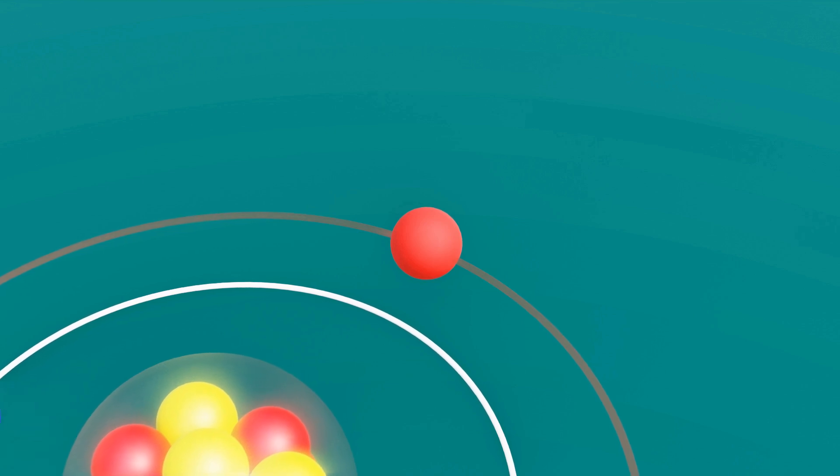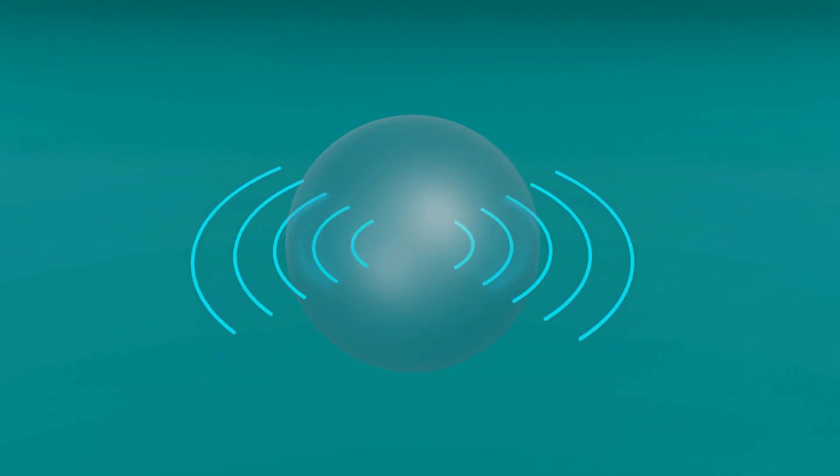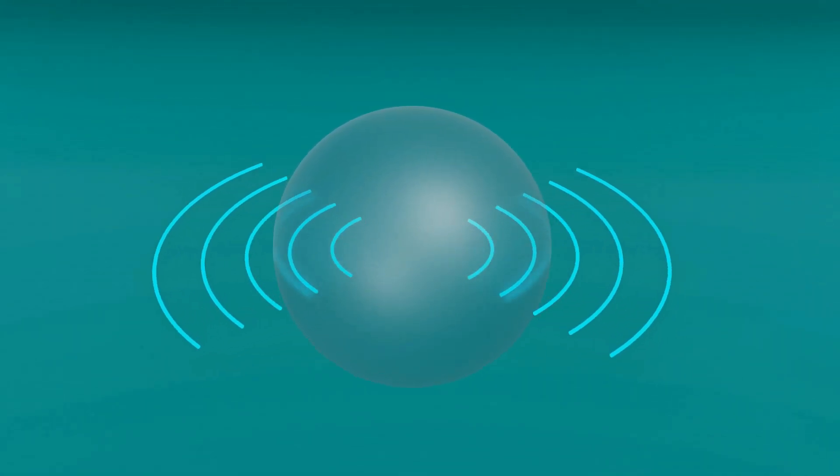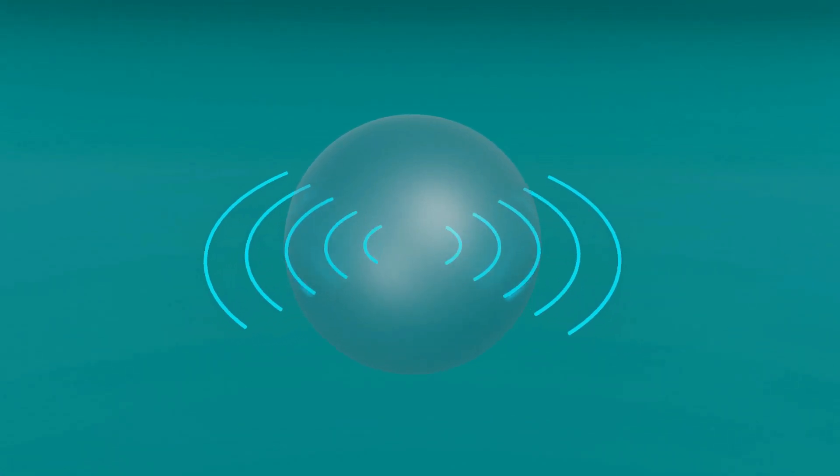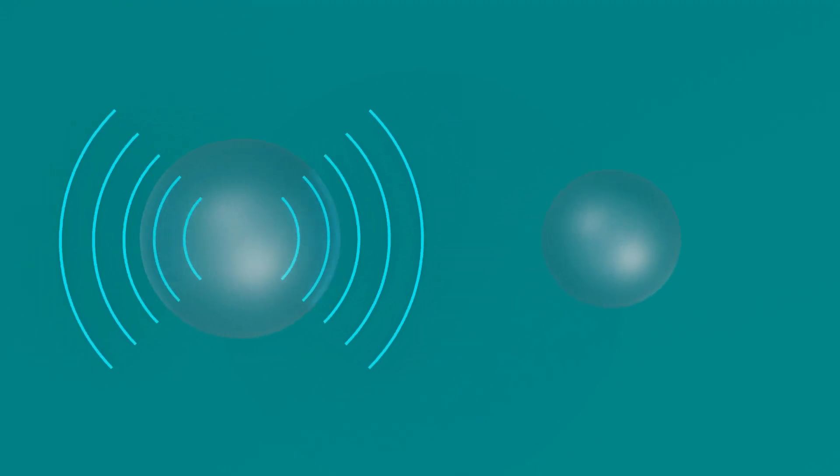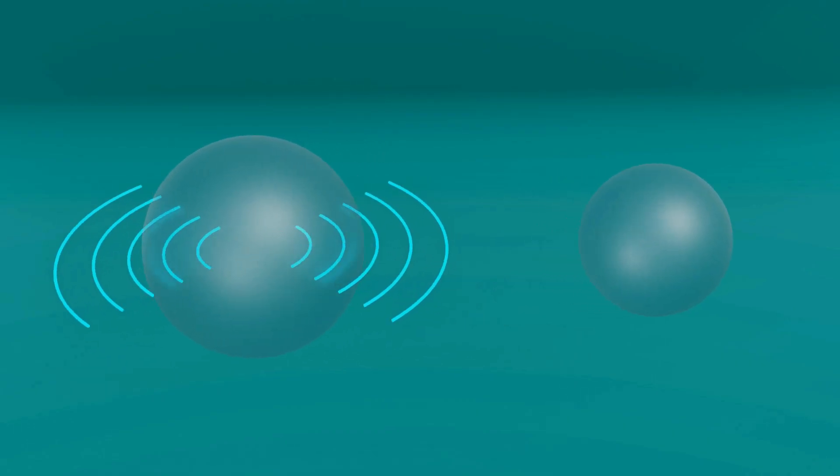When an atom undergoes an orbital jump, two sub-processes occur simultaneously. One, the effective size of the atom increases. Two, the distance between neighboring atoms decreases. Both of these changes strengthen the repulsive interaction between atoms, a phenomenon known as orbital repulsion. This repulsion pushes atoms apart, causing them to move in opposite directions.